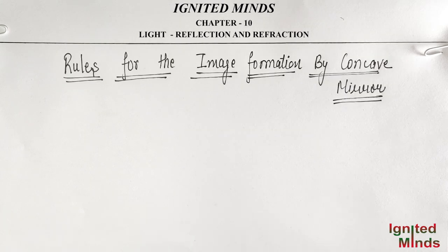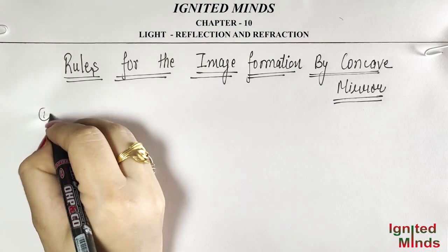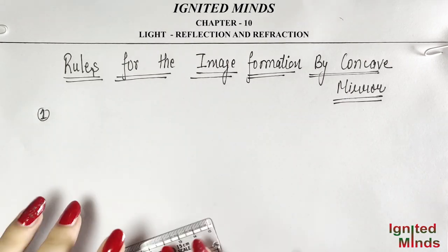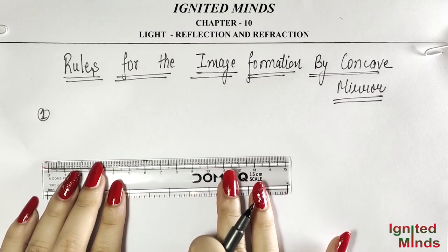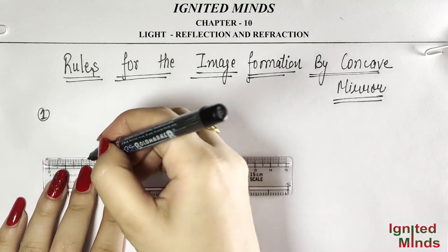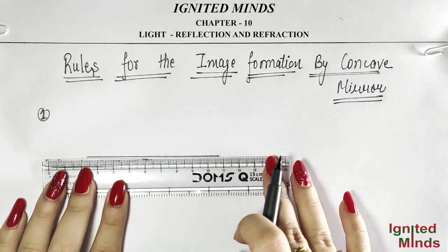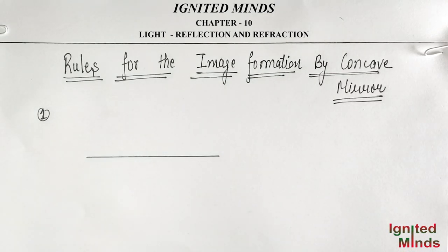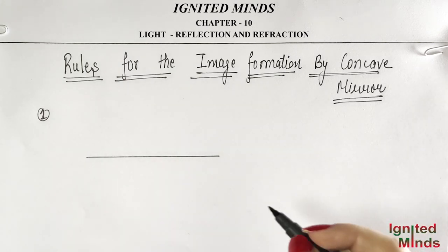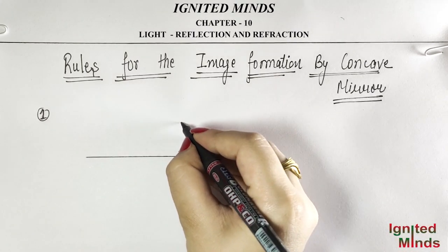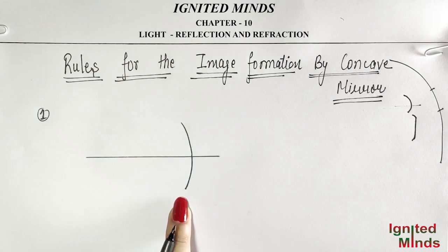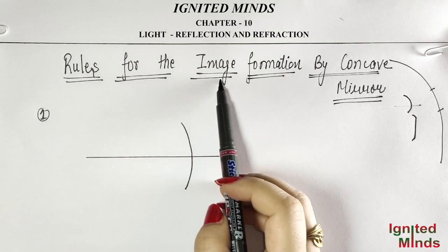Rules for the Image Formation by Concave Mirror. So what is the first rule? The first rule involves the principle axis. I hope you have seen the recent video, then you will know what principle axis is and how we draw the Concave Mirror. Concave Mirror is this.